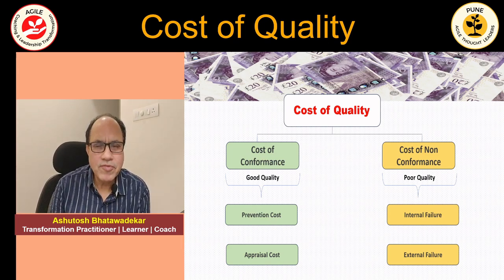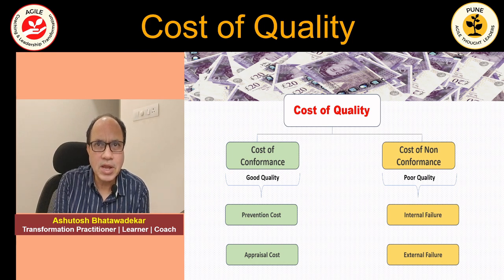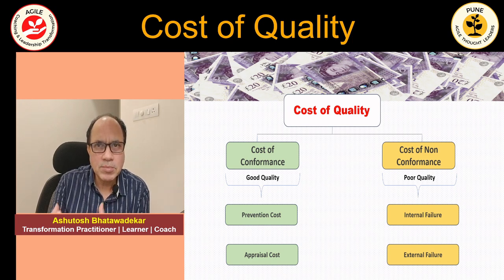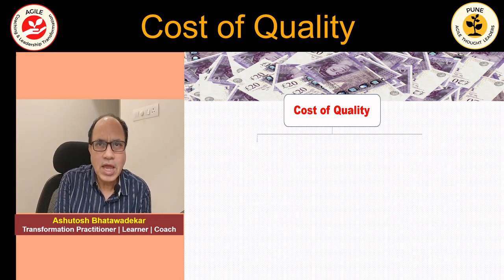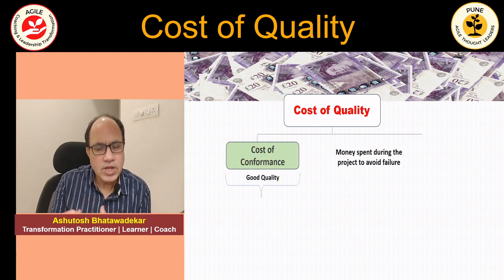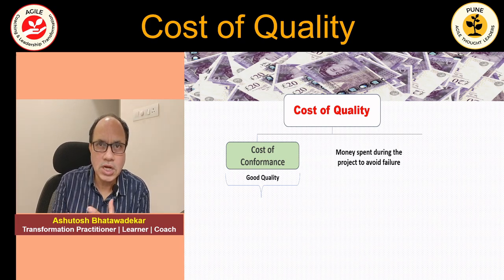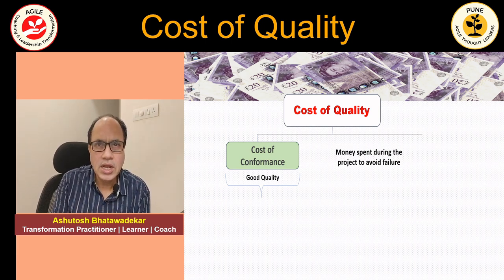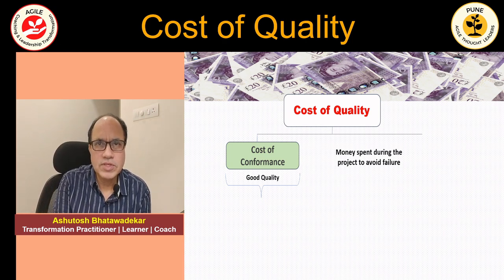Taking an ice cream manufacturing unit as our example: the quality of ice cream to a great extent depends on whether it is able to stay frozen in diverse climatic conditions. The cost of good quality, or cost of conformance, is defined as money spent during the project to avoid failure — we are preventing the defect from getting injected into the system, so that the final product is a good quality deliverable.